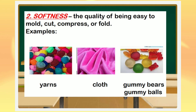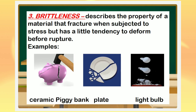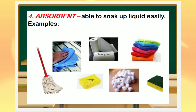Number two is softness — the quality of being easy to mold, cut, compress, or fold. These are the different examples. Number three is brittleness — it describes the property of a material that fractures when subjected to stress but has little tendency to deform before rupture. And these are the different examples. Number four is absorbent — it is able to soak up liquid easily. Look at the different examples.